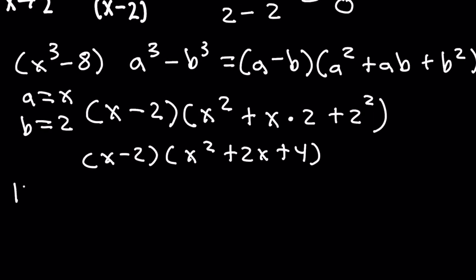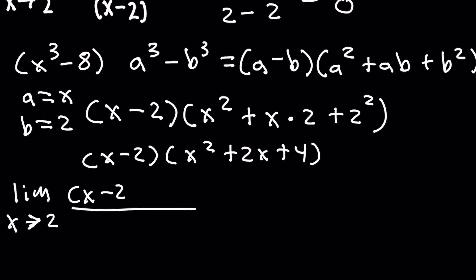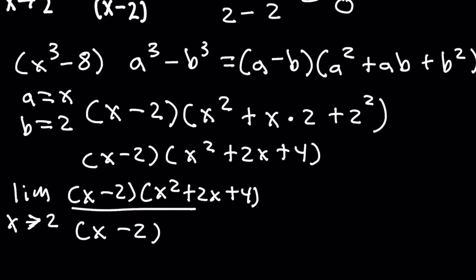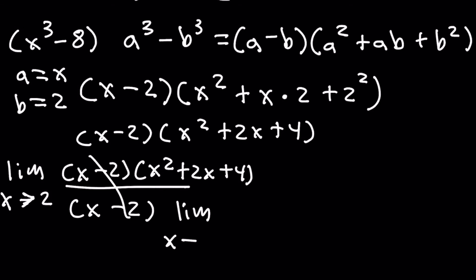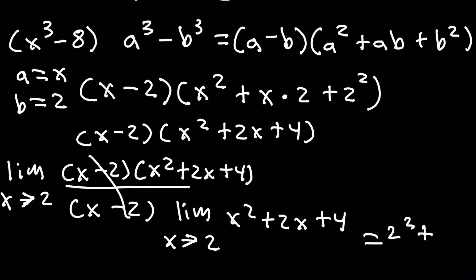So the limit as x approaches 2 has (x minus 2)(x squared plus 2x plus 4) on top and (x minus 2) on the bottom. The x minus 2 terms cancel, leaving the limit as x approaches 2 of x squared plus 2x plus 4. Plugging in 2: 2 squared is 4, plus 2 times 2 is 4, plus 4. So 4 plus 4 plus 4 equals 12. Our final answer is 12.